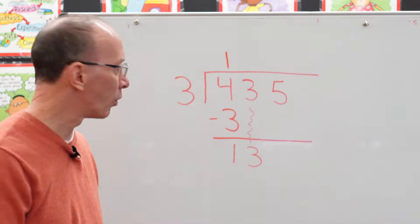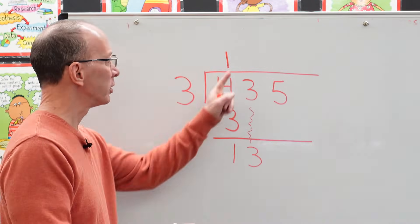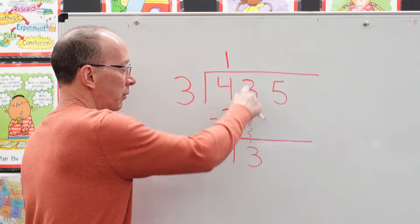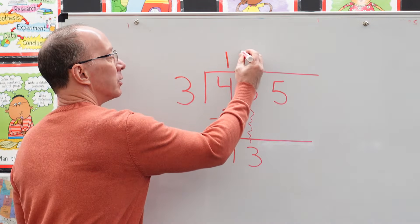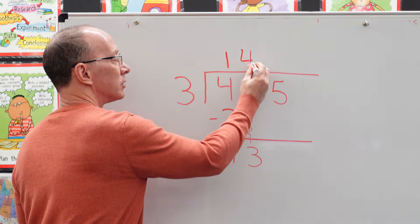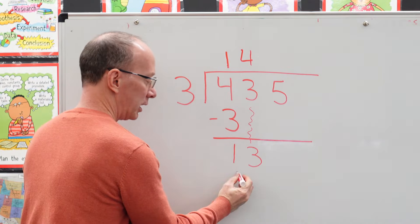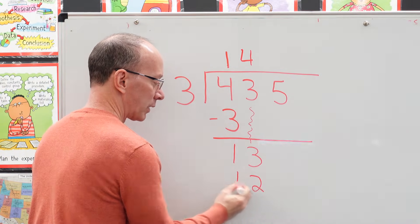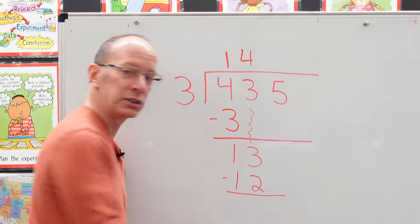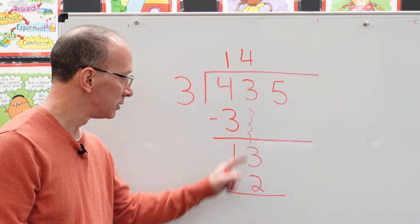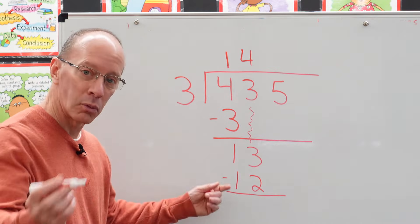So three times four would be a good choice. So let's put the four right here, because we're dealing with this three here and this number here. So we put the four right here. So four times three equals 12. And again, you're going to subtract. So three minus two, one.